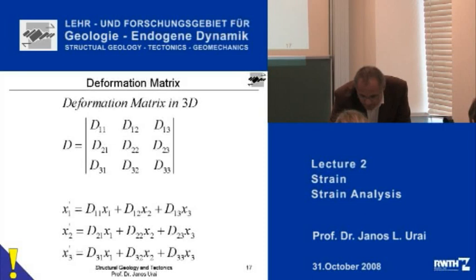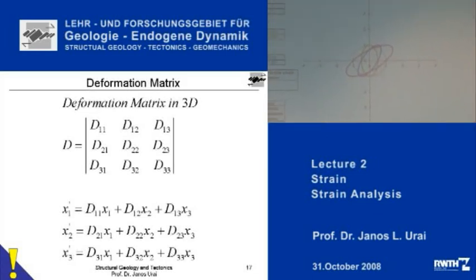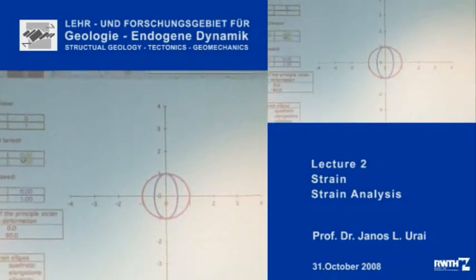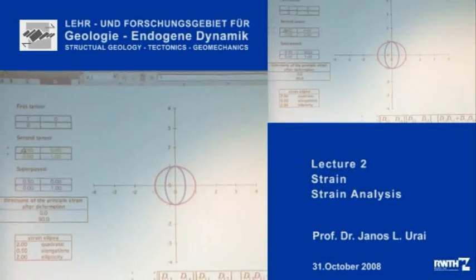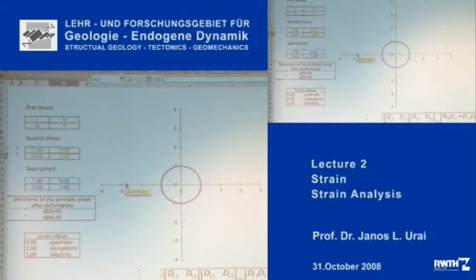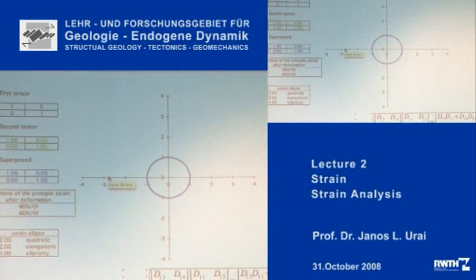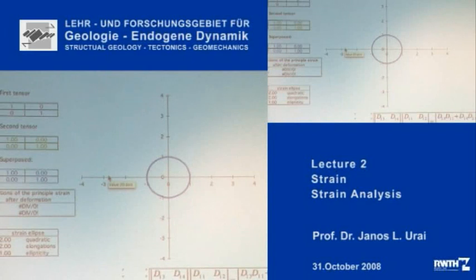Now let's go to the next little demo. What I've programmed now is two of these D deformations. You can take a circle or whatever object, deform it once, and then deform it again. This is very important because if you imagine the formation of the Alps — two continents coming together — then rocks are deformed again and again many, many times. So the superposition of deformations is very important.